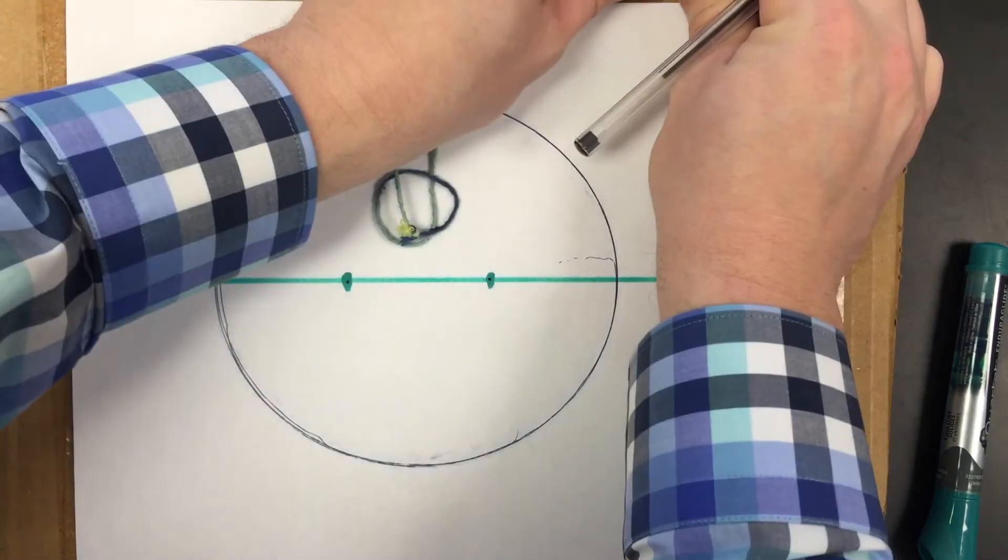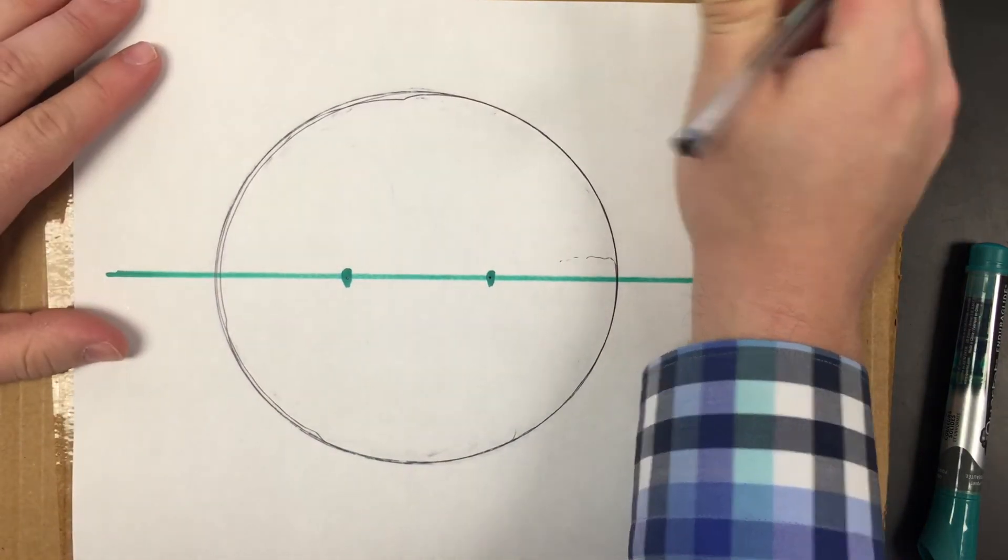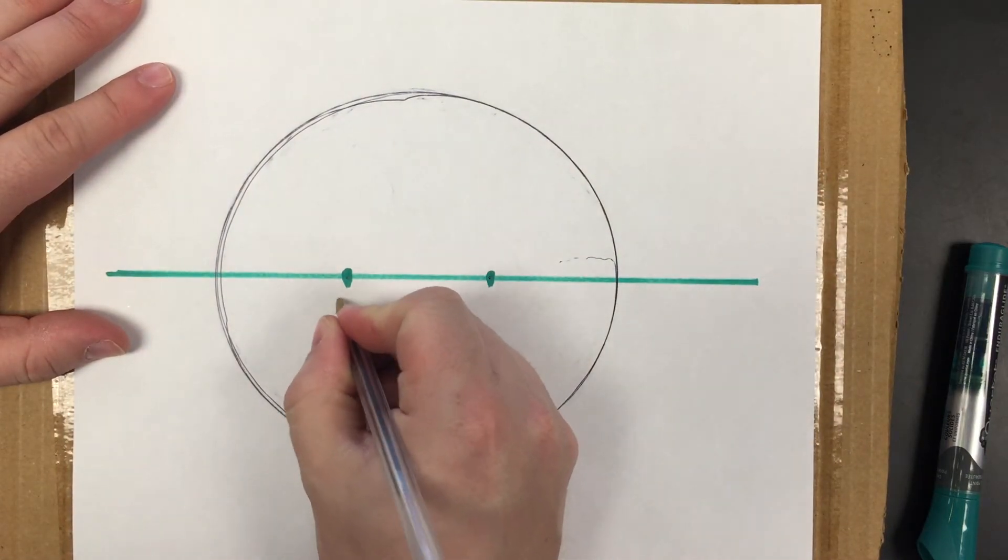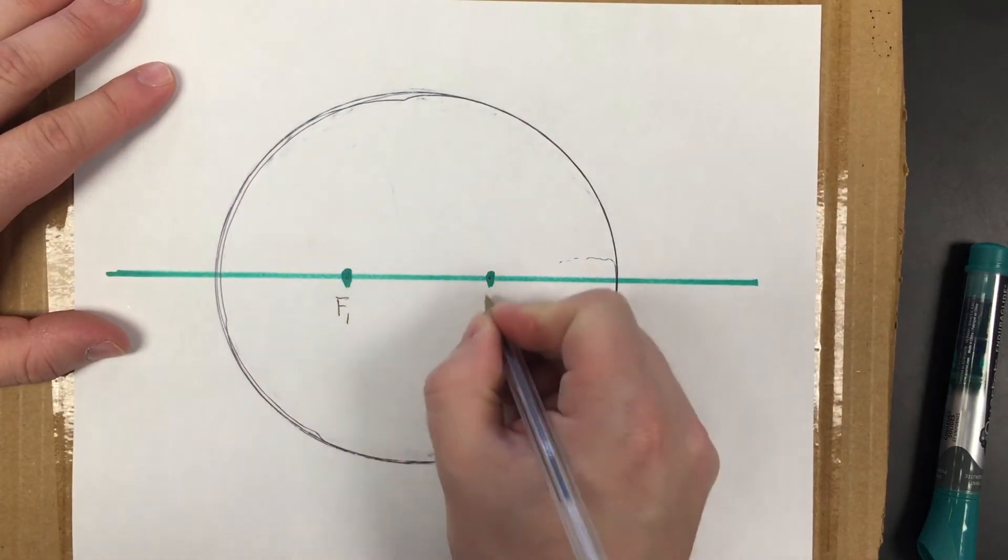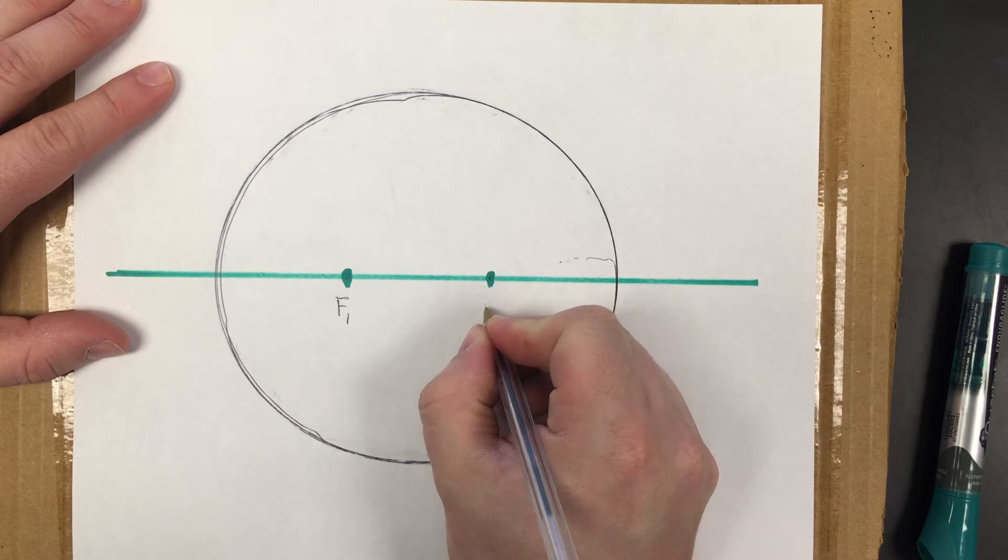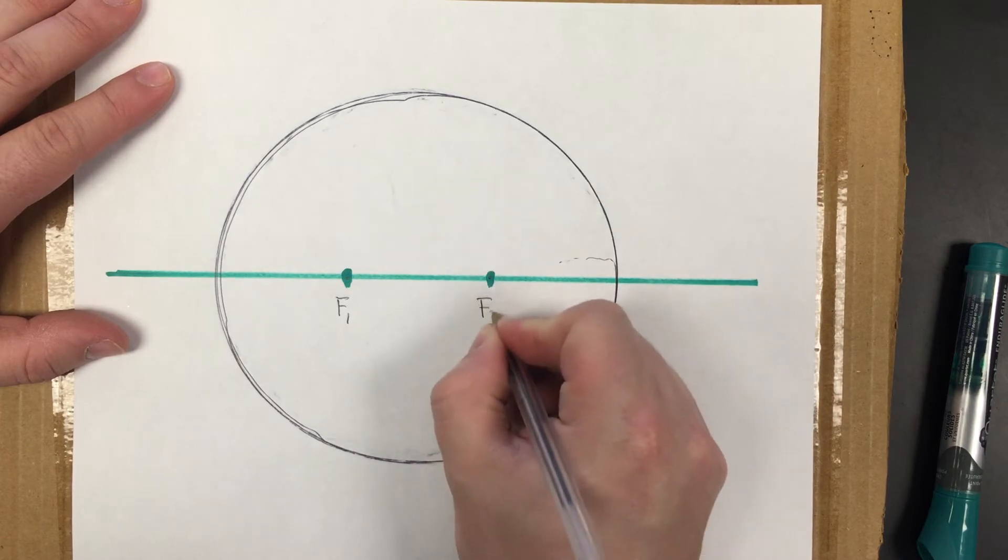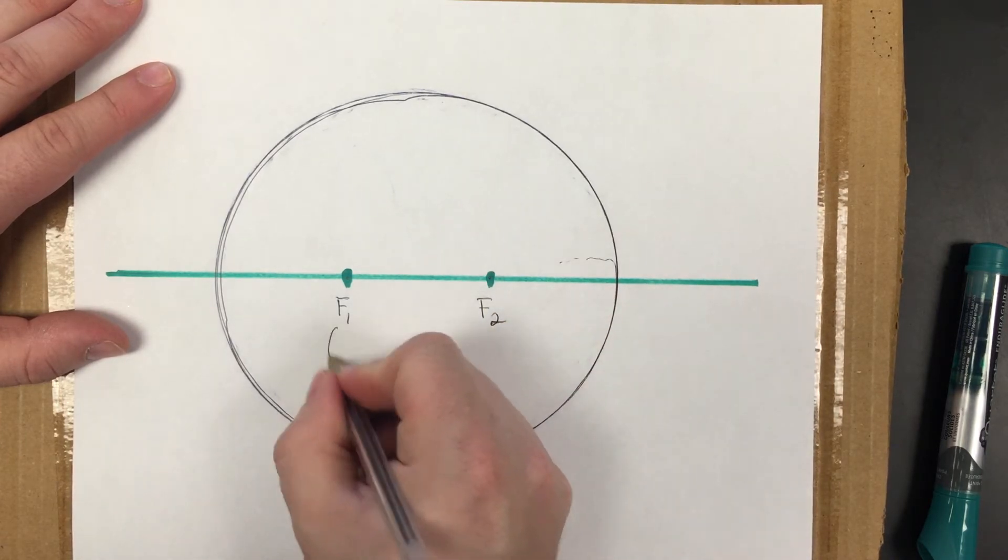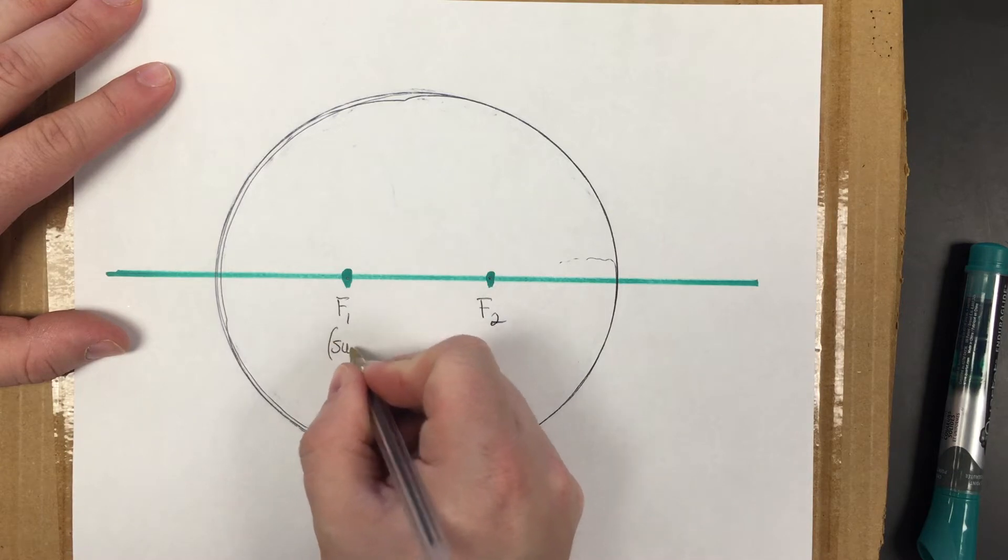Once you have done that, you can take your pins out. Where the pins were, you're going to label those two areas F1, the focal point 1, and focal point 2 of the ellipse, and F1 we usually represent as the Sun.